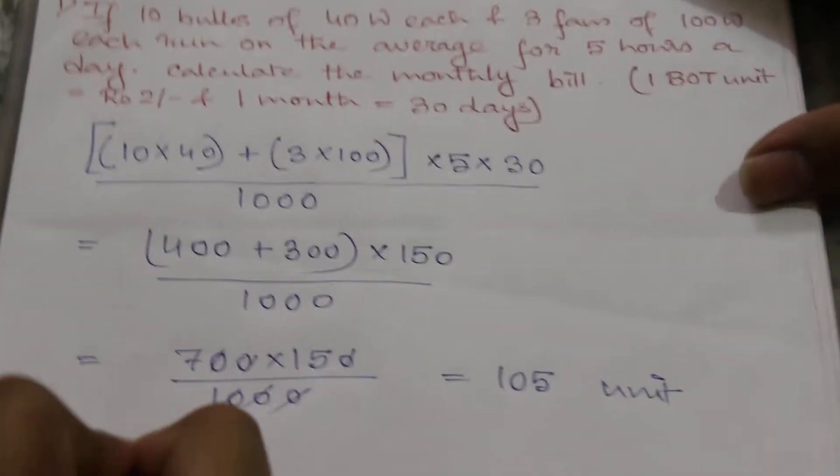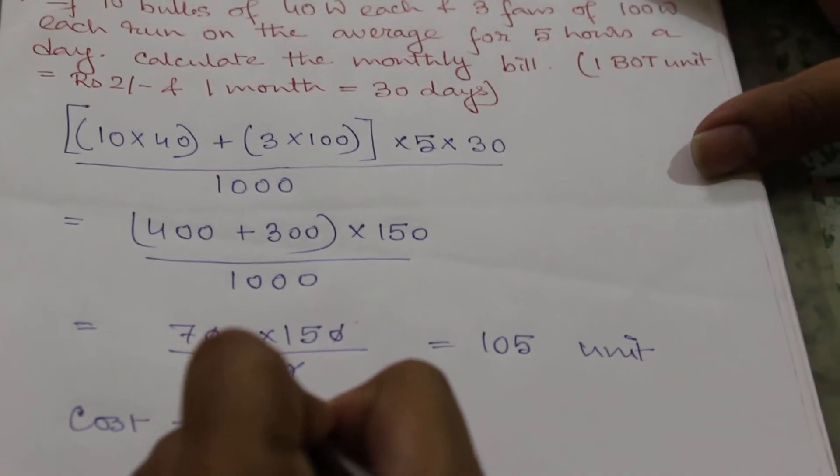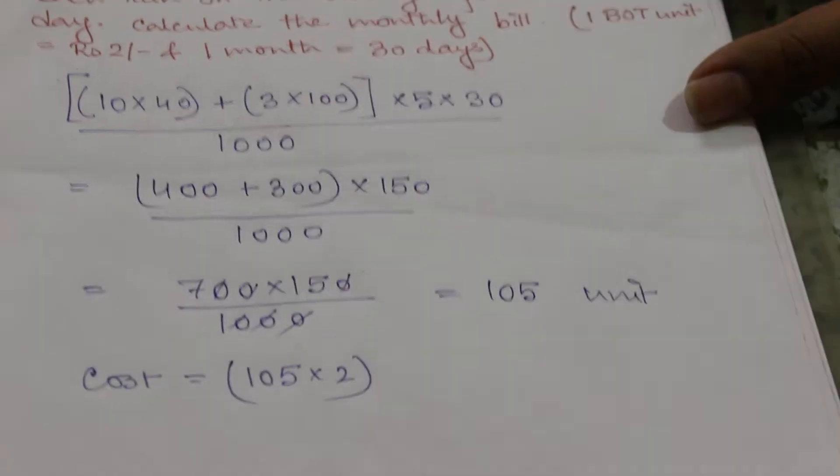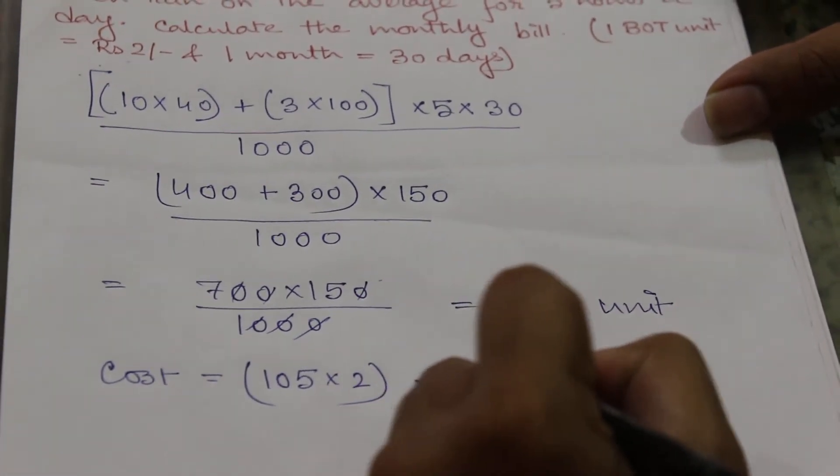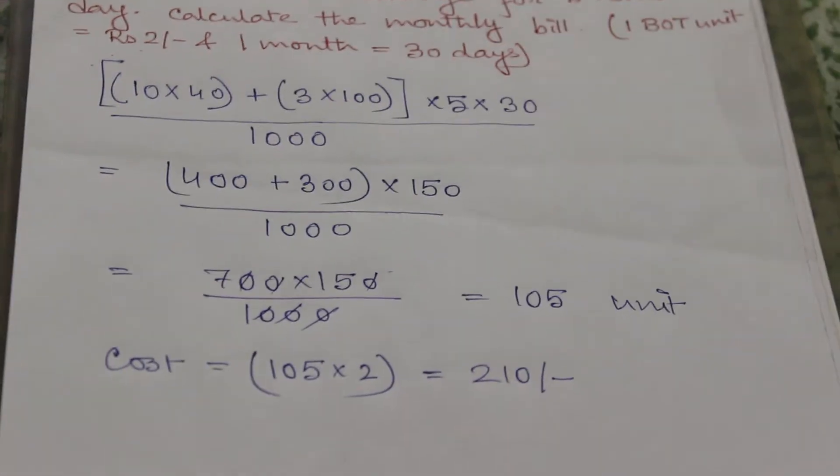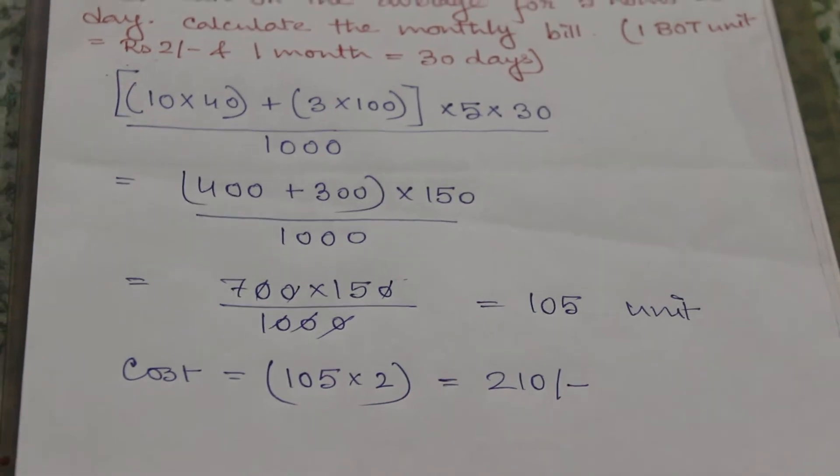So the total cost of monthly bill will be equal to 105 into 2 as 1 unit costs Rs 2. This will be the monthly electric bill. We are moving on to our next example which is the last one.